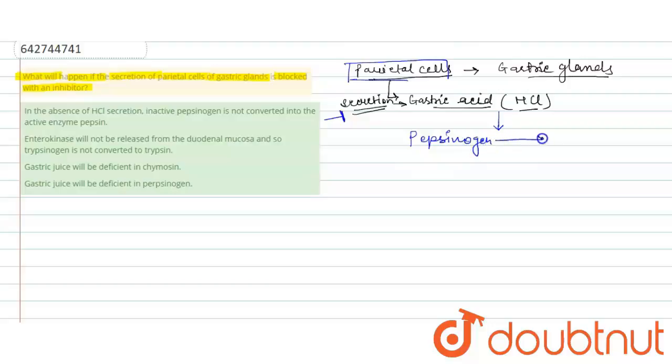This HCl, hydrochloric acid, enables this conversion. When this secretion is blocked by an inhibitor, this conversion is not done. Pepsinogen is not converted into pepsin.